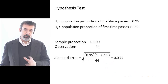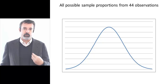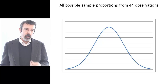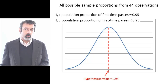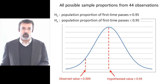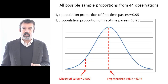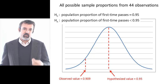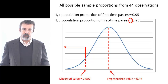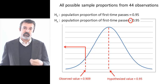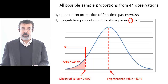We can now picture the distribution of all possible sample proportions drawn from 44 observations. We hypothesize that the population proportion is 95%, and we observe a sample proportion of 90.9%. Our alternative hypothesis is that the population proportion is less than 95%, so we're concerned with the area to the left of what we observed. On the distribution, the area to the left of 90.9% is 10.7%. This is our p-value.